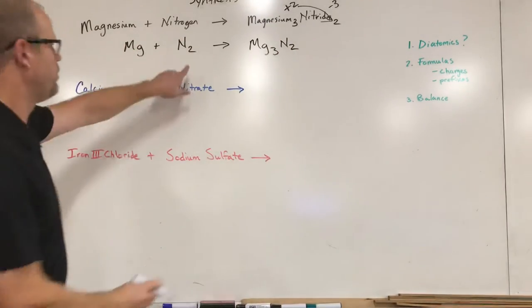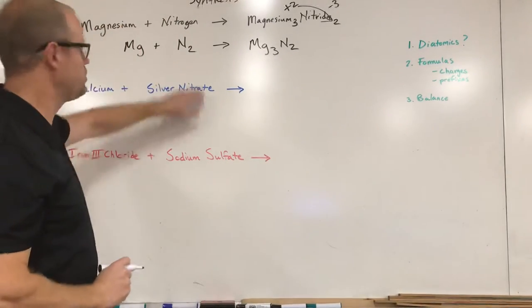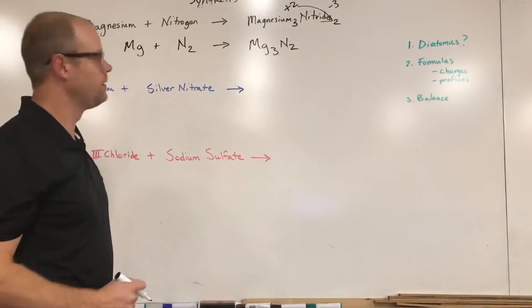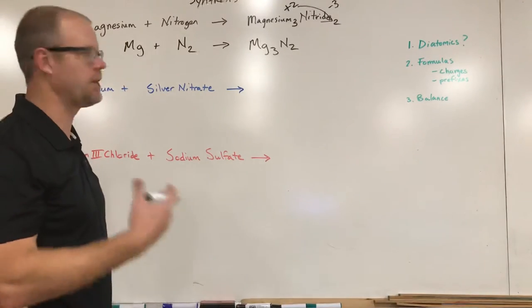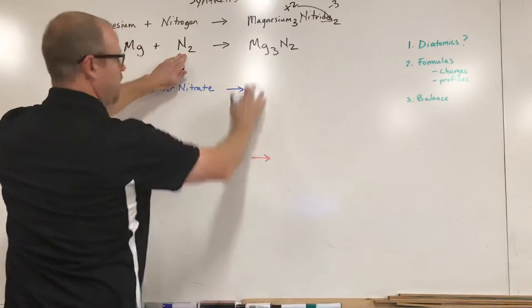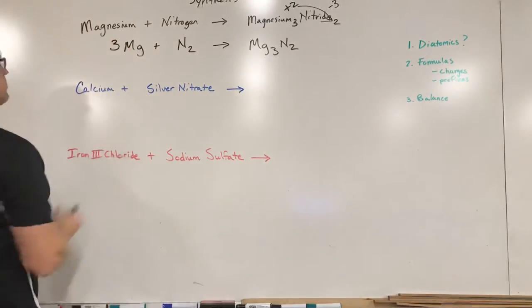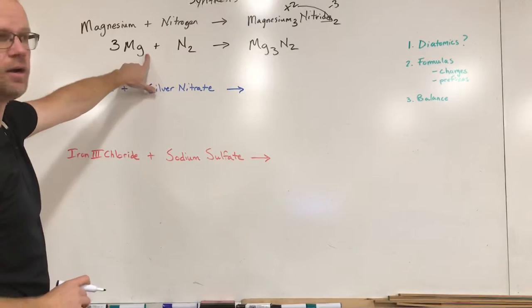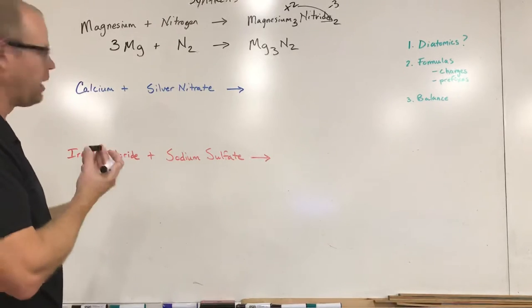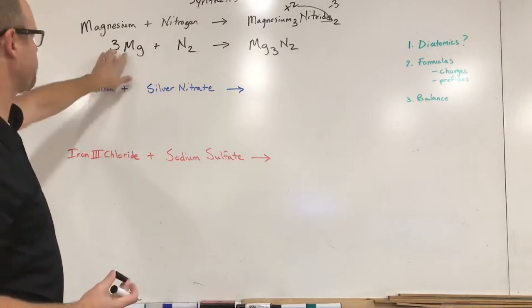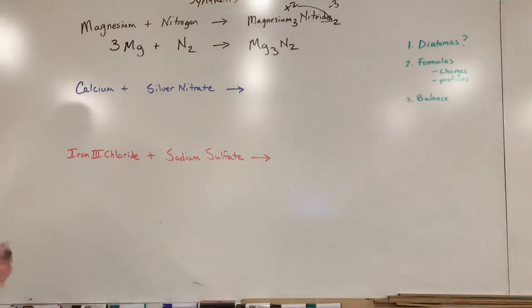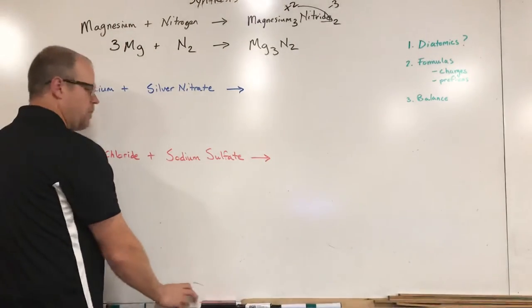So I'm going to write Mg3N2. It's important to note these twos right here are not there for the same reason. This two is here because that's how we find nitrogen in nature. This two is here because of the charge that was on the magnesium ion. So they're both there, but they're not there for the same reason. Now I've got to look at this and balance it. I've got two nitrogens on one side, two nitrogens on the other. But I have three magnesium atoms here, so I'm going to need three magnesium atoms right there. A common misconception is people want to put a little three right there. By putting a little three right there, we're saying those three magnesium atoms are combined chemically and bonded together into one molecule. That's not what we have here. We just have three times as many separate magnesium atoms that have to come together to make this compound. And that's a synthesis reaction.